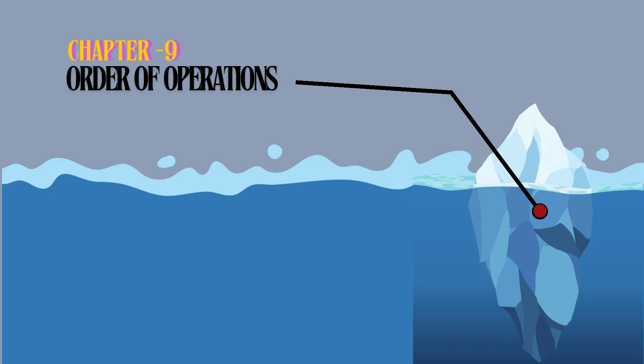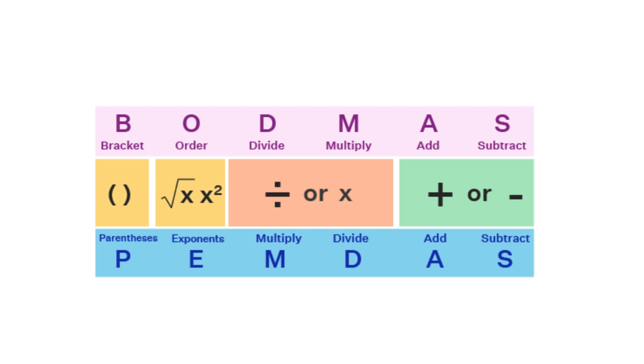Order of operations. In an expression, operations must be done in a certain order, going from left to right. One, if parentheses are used, do everything inside first.